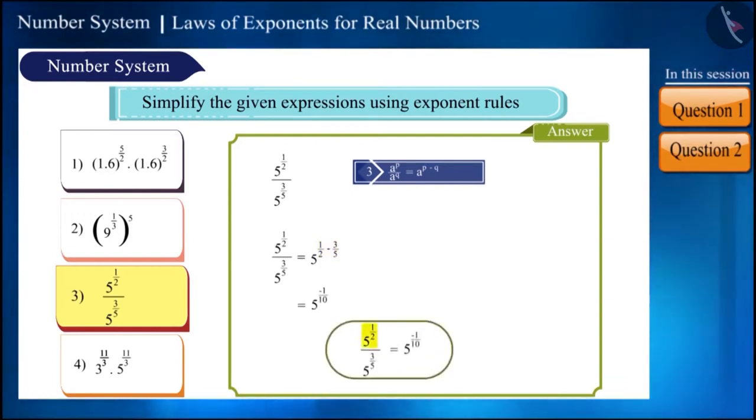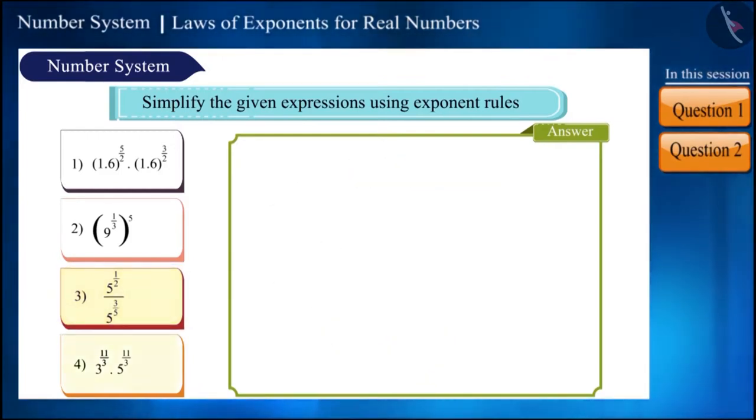5 raised to the power 1/2 divided by 5 raised to the power 3/5 can also be written as 5 raised to the power minus 1/10.